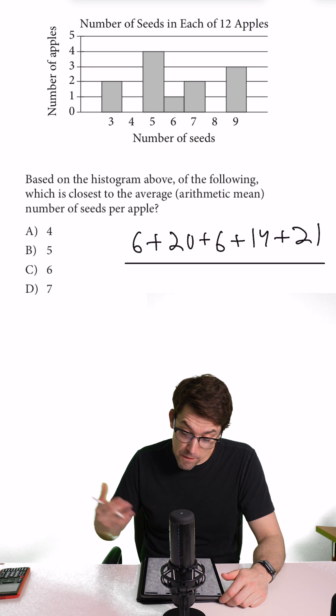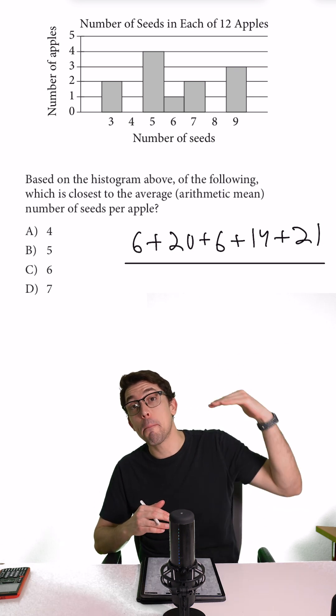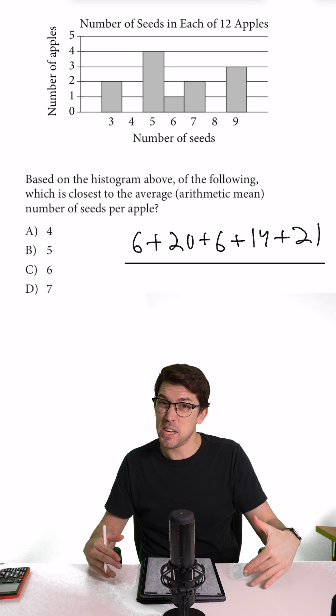Now we need to divide this by the total number of apples to give us the average number of seeds per apple. Remember, whenever you have per something, that means it's in the denominator.